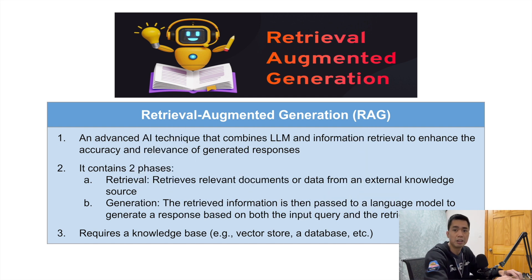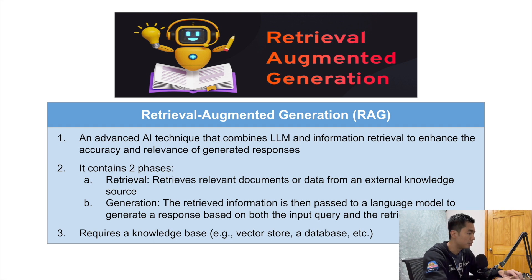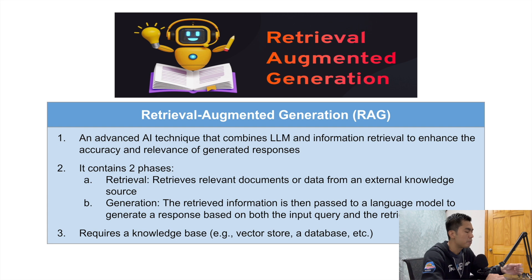...is actually the continuation of the previous video, so if you haven't watched that make sure you check that out first — I'll provide the link down below. But before we get to today's tutorial, I want to briefly talk about what RAG is, because this is a pretty new idea in the AI industry. RAG is pretty much a technique that a lot of people in the AI industry use as additional information to feed into the LLM.